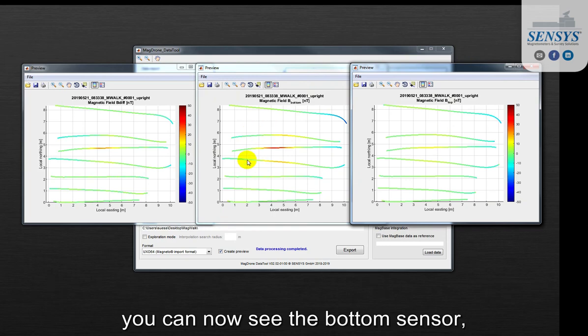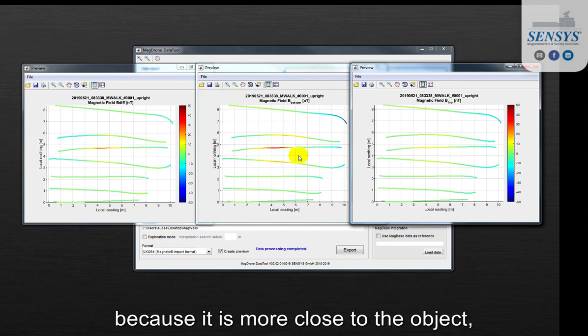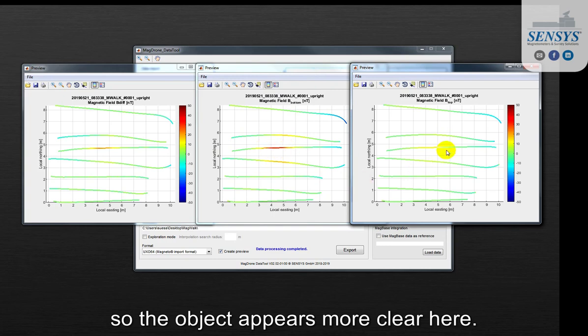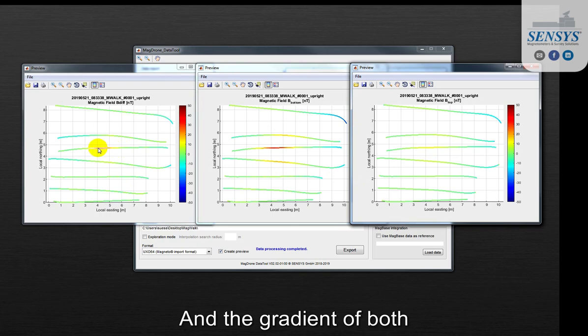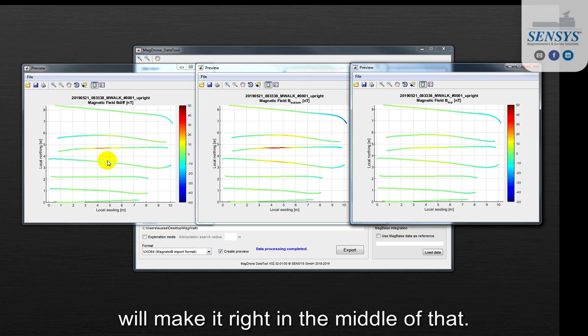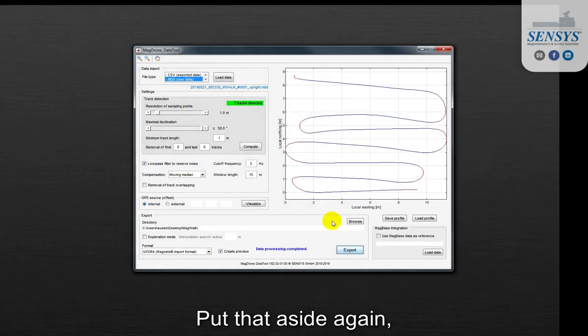Interestingly you can now see the bottom sensor because it is more close to the object, so the object appears more clear here. It doesn't really appear quite good here, and the gradient of both will make it right in the middle of that. So quite understandable. Put that aside again.